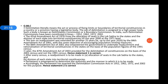The 87th Amendment Act of 2003 provided for delimitation of constituencies on the basis of the 2001 census, instead of the 1991 census. After every census, readjustment — that is, allocation of seats in the Lok Sabha to the states and the division of each state into territorial constituencies — is to be made. Parliament is empowered to determine the authority and manner in which delimitation is to be made. Accordingly, Parliament has enacted Delimitation Commission Acts in 1952, 1962, 1972, and 2002.